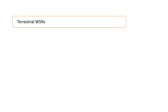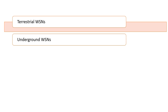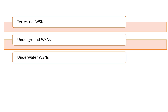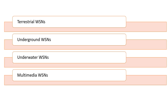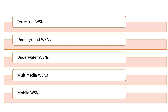The first one is the terrestrial WSNs, then underground, then underwater, then multimedia, and then mobile WSNs. So these are the five categories, and we can see them one by one.